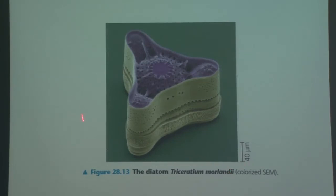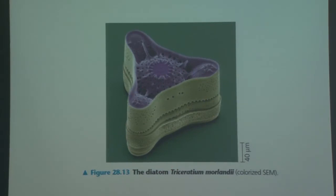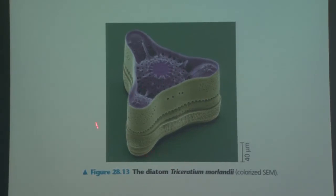This is a picture of a diatom. We talked about producers such as plants, diatoms, and phytoplankton that go through photosynthesis. A diatom is a unicellular alga that goes through photosynthesis.